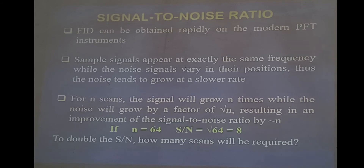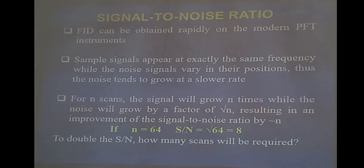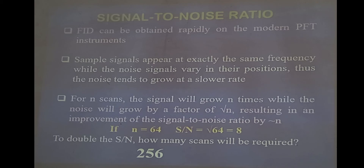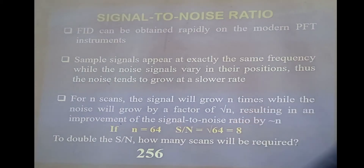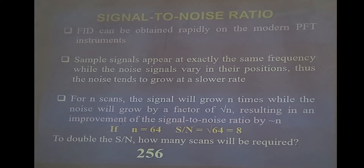If the current signal-to-noise ratio is 8 and you want to take it to 16 — double it — how many scans would be required? The square root of what number equals 16? That is 256, because the square root of 256 is equal to 16. So if you want to double the signal-to-noise ratio, you need to scan your molecule 256 times, and that will give you a signal-to-noise ratio equal to 16.